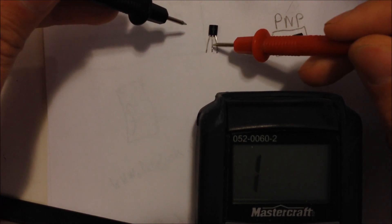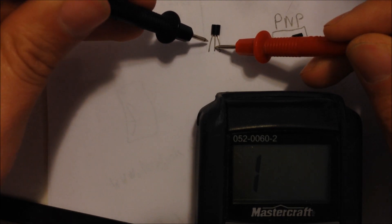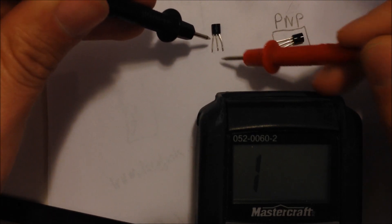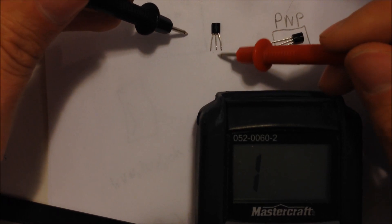So as long as the positive lead is on the base and you get a reading between either the emitter or collector, you'll know that this one here is a PNP—or sorry, an NPN. So the positive is the base.